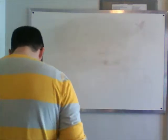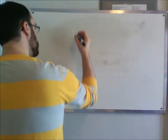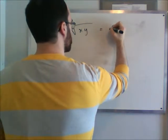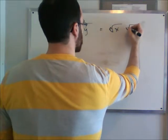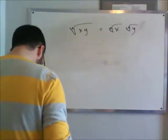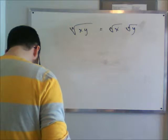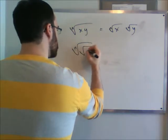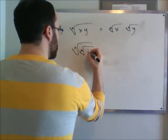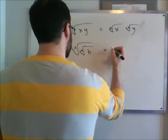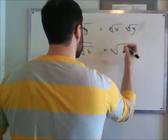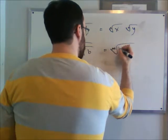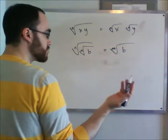A couple of extra examples: if you have the nth root of x times y, that equals the nth root of x times the nth root of y. If you have a radical inside a radical — the nth root of the mth root of b — you multiply them like fractions, giving you the mnth root of b.